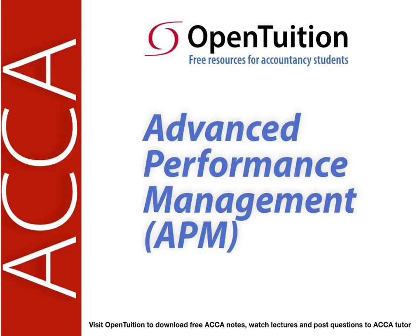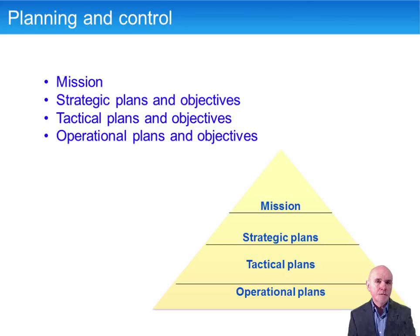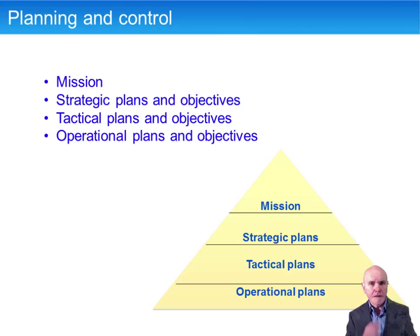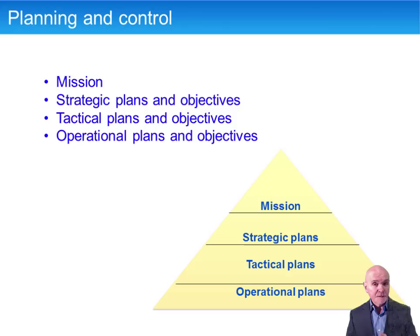Chapter 2 looks at the process of planning and control. This is very much a revision of what you will have already come across in P3. There are some new aspects, but even when you get on to the more familiar stuff from P3, you should always be thinking in this paper: how will this help us to manage performance? Because that's the name of the paper. We're always reverting back to how can we manage performance to improve performance. And as we saw in the previous chapter, performance is a very open-ended concept, meaning very different things to different people.